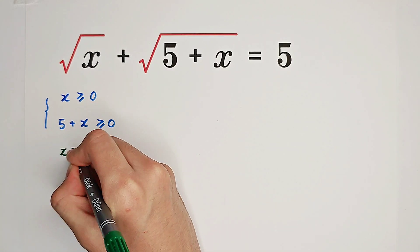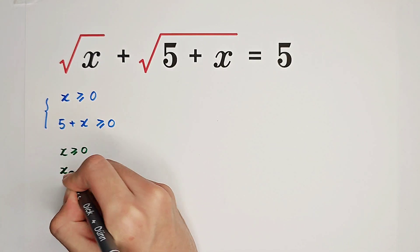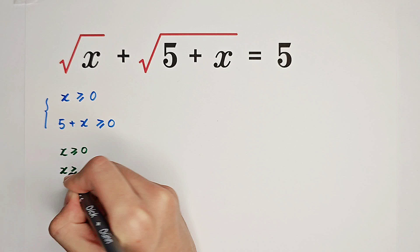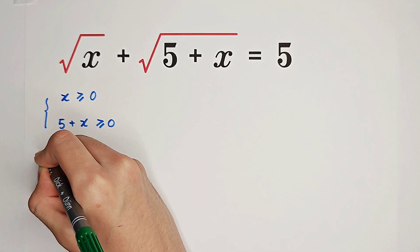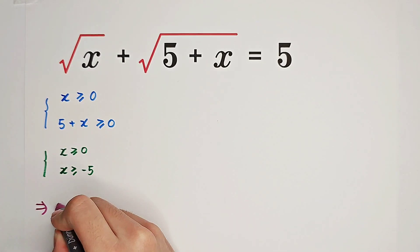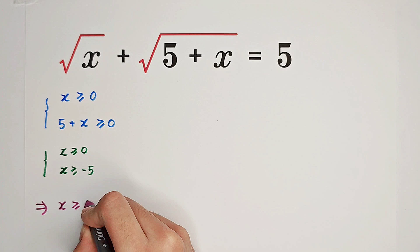This implies x is non-negative and x is greater than or equal to negative 5 simultaneously. So x is always non-negative.